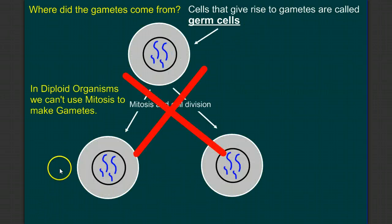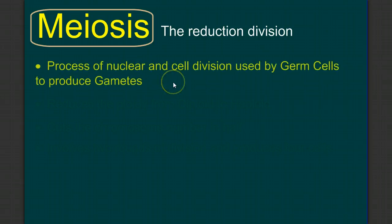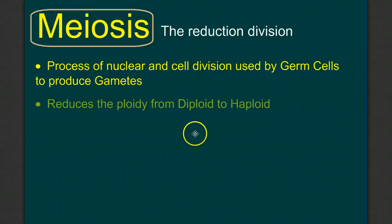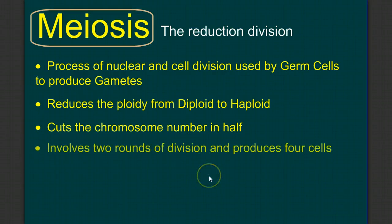So it's not mitosis and cell division that gives rise to gametes, at least not in diploid organisms. So we need another process — meiosis, the reduction division. To preview: meiosis is a process of nuclear division and cell division used by germ cells to produce gametes. It reduces the ploidy from diploid to haploid, cutting the chromosome number in half. It involves two rounds of division and produces four gametes.